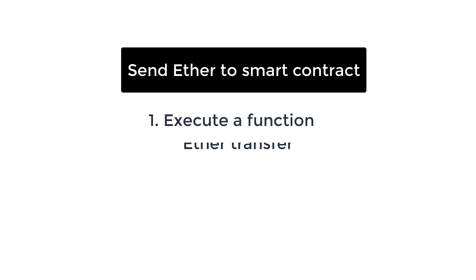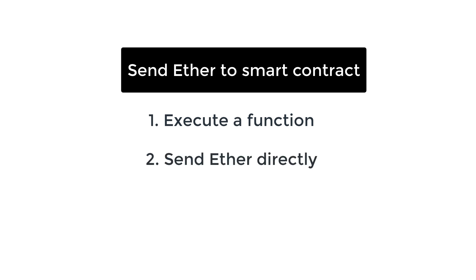The first way is by executing a function of our smart contract. When we call this function, in the transaction parameters we will also specify that we want to transfer Ether. The second option is to send Ether directly to the smart contract. A function will still be executed — that's what we call the fallback function, and I'll explain this after.